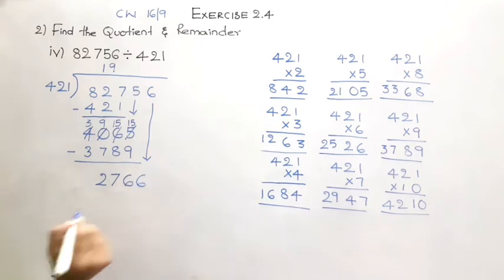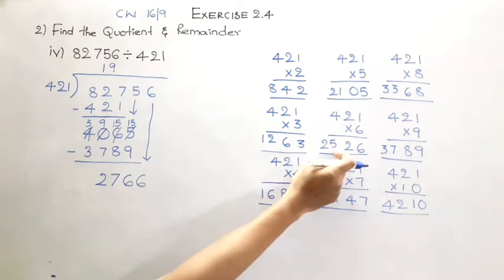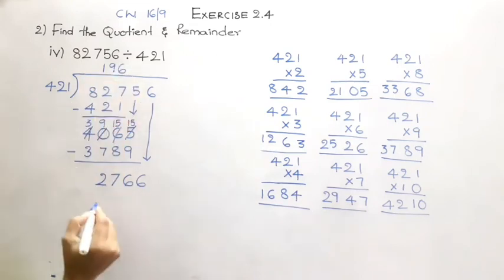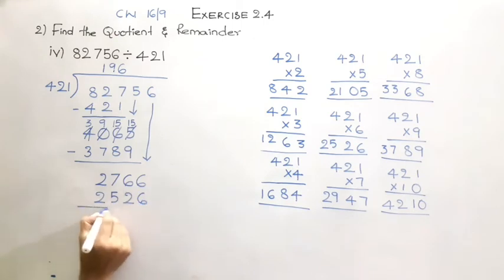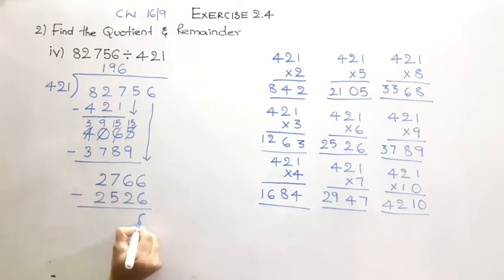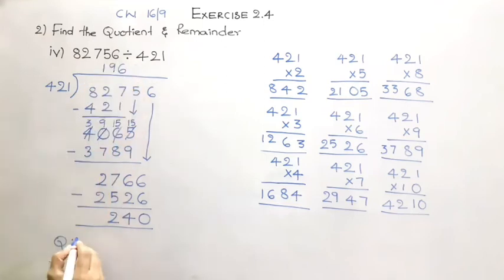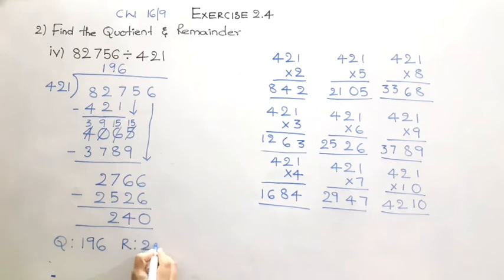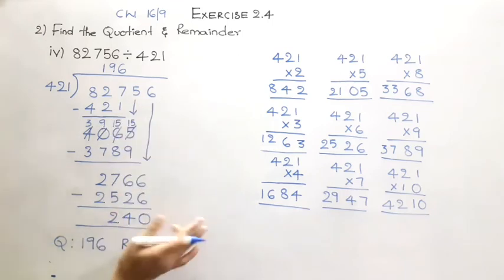We are going to drop the next digit which is 6, giving us 2766. From the table, the closest value is at 421 times 6 which is 2526. So 6 times: subtraction gives 6 minus 6 is 0, 6 minus 2 is 4, 7 minus 5 is 2, 2 minus 2 is 0. Hence the quotient of this division is 196 and the remainder is 240.